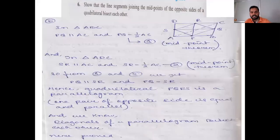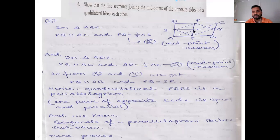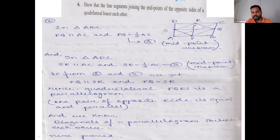Question 6: Show that the line segments joining the midpoints of opposite sides of a quadrilateral bisect each other. This is straightforward — just show that PQRS is a parallelogram using the midpoint theorem. By the property of a parallelogram, the diagonals bisect each other, and that proves the result.